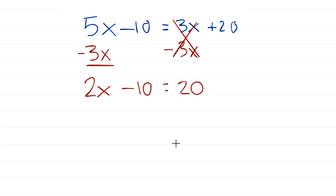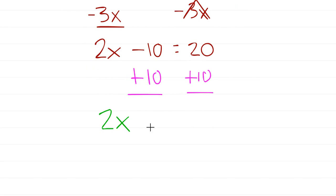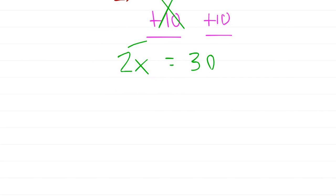After subtracting 3x, we get 2x minus 10 equals 20. A lot of students want to then bring the 20 to the left side — but remember the main purpose: variables on one side, constants on the other. We've accomplished step one; there's only a variable term on one side. Now let's get everything else on the other side. I see the minus 10, so I add 10 to both sides. That gives us 2x equals 30, which looks exactly like the one-step equations we've done before. Divide by 2 and we get x equals 15.